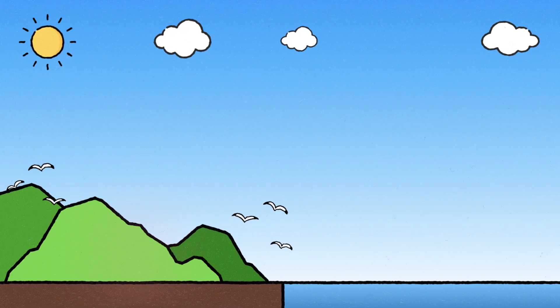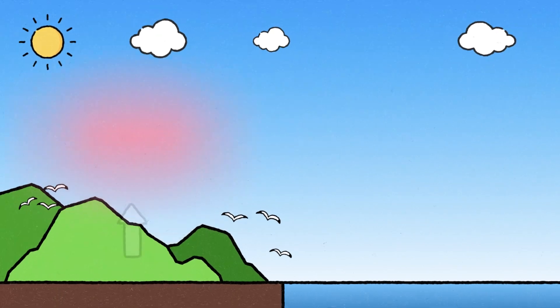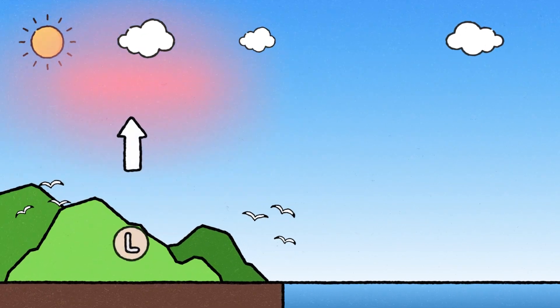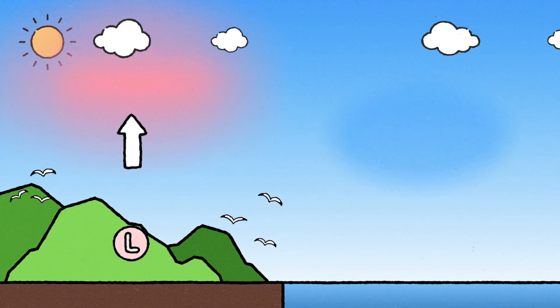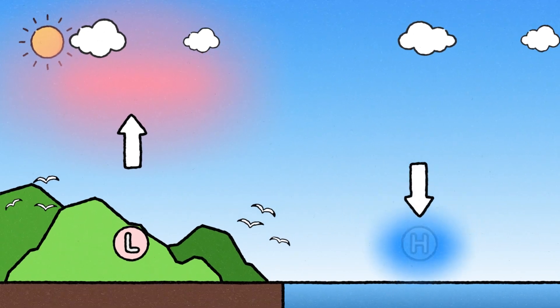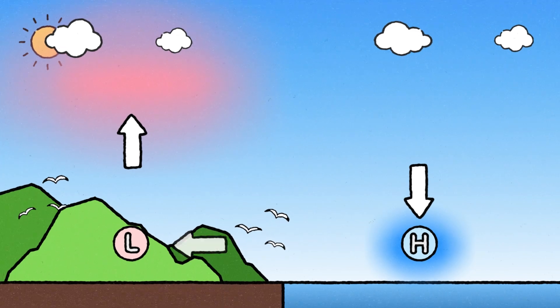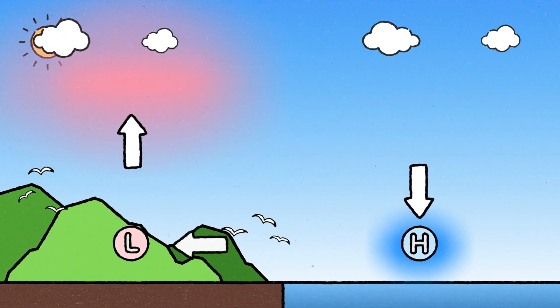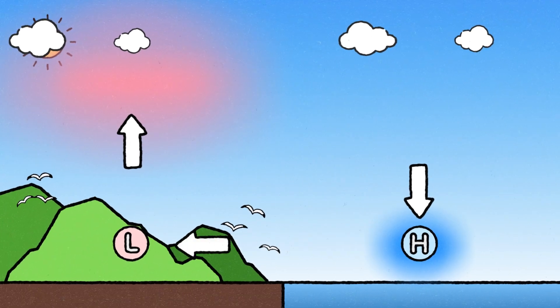During the day, the land heats up faster than the sea. As the air over the land becomes warmer, it rises, resulting in a low pressure area. In contrast, the air over the sea, which takes longer to heat up, stays cooler and denser, maintaining a high pressure area. Since air moves from high pressure areas to low pressure areas, the cooler air from the sea flows toward the land. This is called a sea breeze.